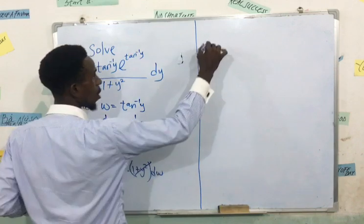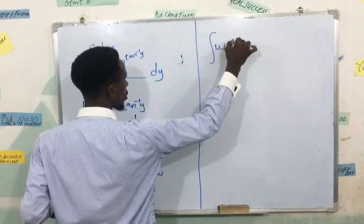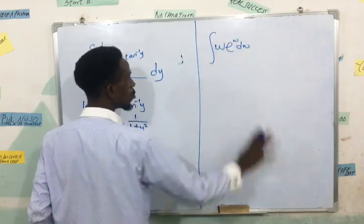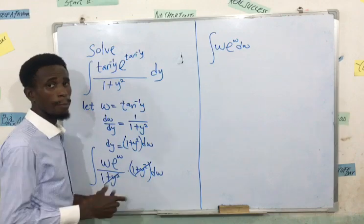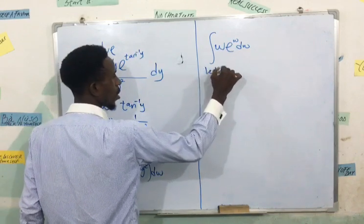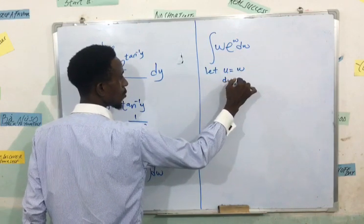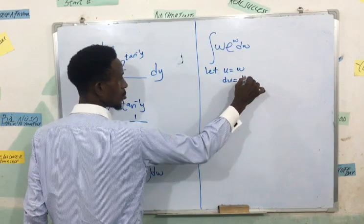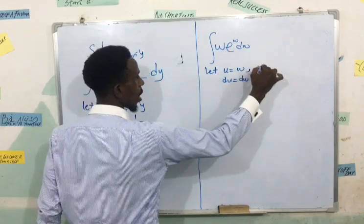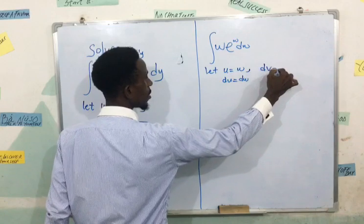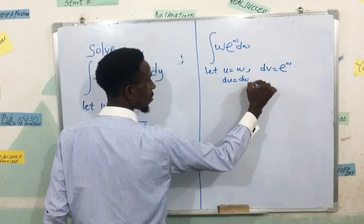Then this is what is left, so I'll have w exponential w dw. So I'll have to use my integration by parts. Integration by parts I'll select u equals to w, so du now is going to give me dw. Then I'll say let dv equals exponential w. If I integrate this now I'll have v is equal to exponential w.